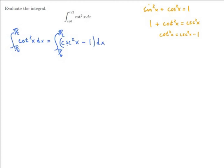What is the anti-derivative of cosecant squared? Cotangent and cosecant are related a lot like tangent and secant. The derivative of cotangent is negative cosecant squared of x, so the anti-derivative of cosecant squared is negative cotangent of x. And the anti-derivative of 1 is just x. So we're able to evaluate this anti-derivative.